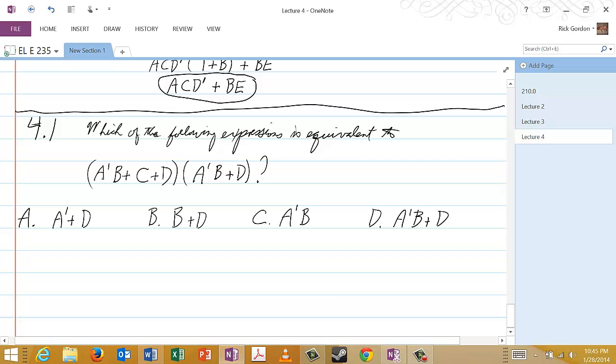And choice D is A'B or D. So you should choose one of those expressions as the equivalent of this expression here. And when I say equivalent, I mean always equal to the same value for any choice of values of the Boolean variables.